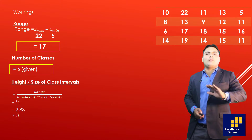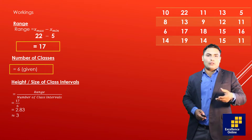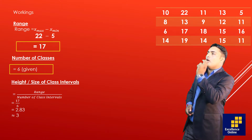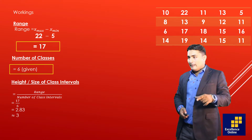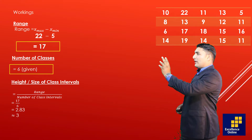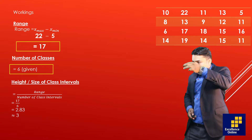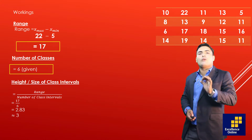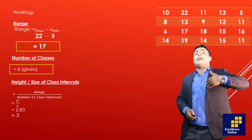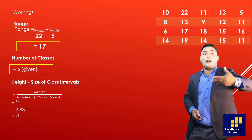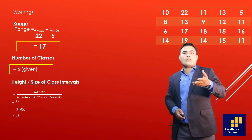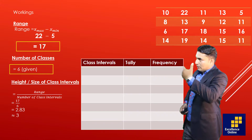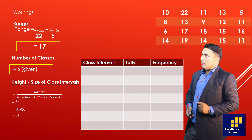याद रखिएगा कि number of class intervals कभी भी decimal में नहीं हो सकते — वो discrete variable होता है, whole number में होता है। इसी तरह size भी discrete या continuous हो सकता है, लेकिन इस data में whole number में values given हैं, तो size भी whole number में होगा। अगर values 10.1, 22.3 जैसी होतीं तो decimal लेते। 2.83 की nearest higher value 3 होती है, तो हम size 3 लेंगे।